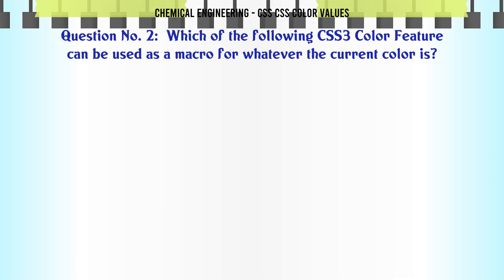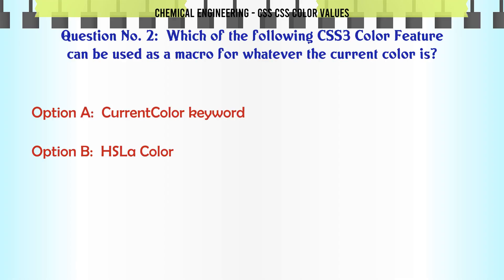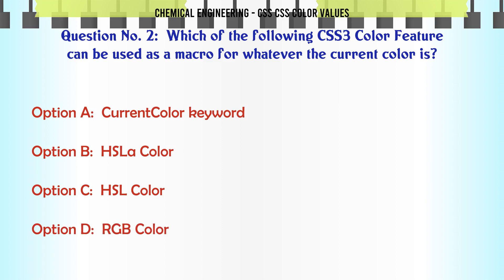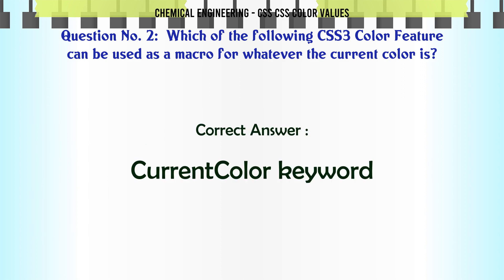Which of the following CSS3 color features can be used as a macro for whatever the current color is? A: currentcolor keyword. B: HSLA color. C: HSL color. D: RGB color. The correct answer is: currentcolor keyword.